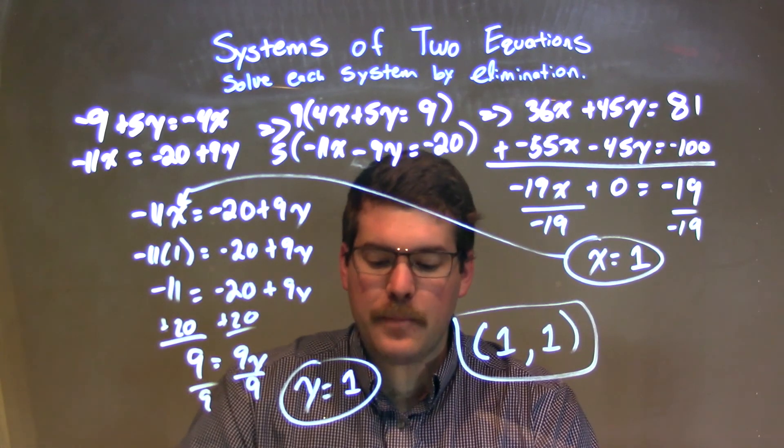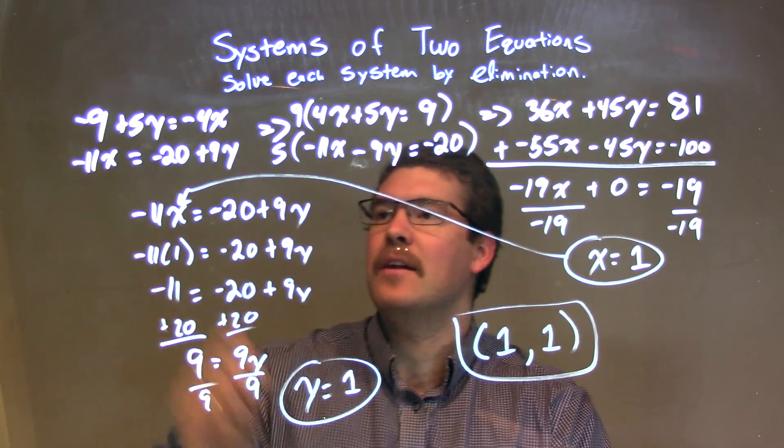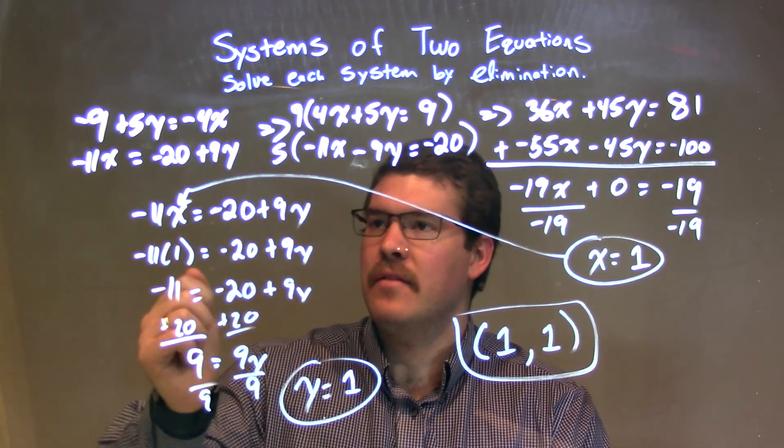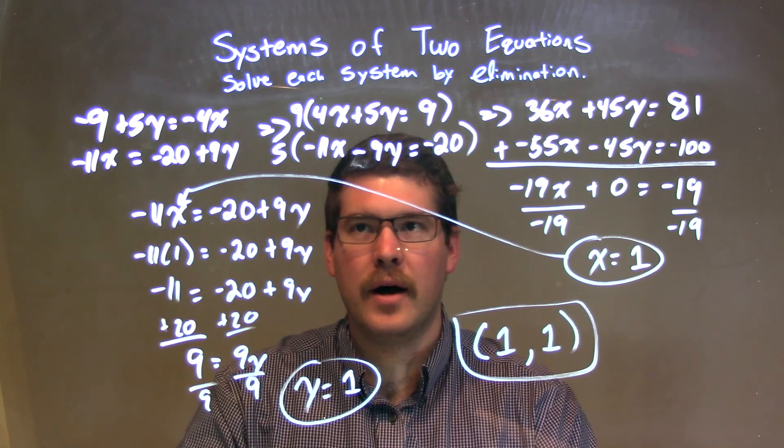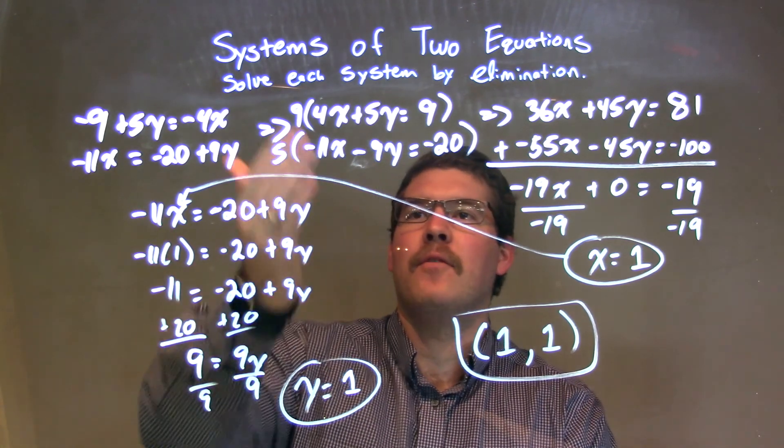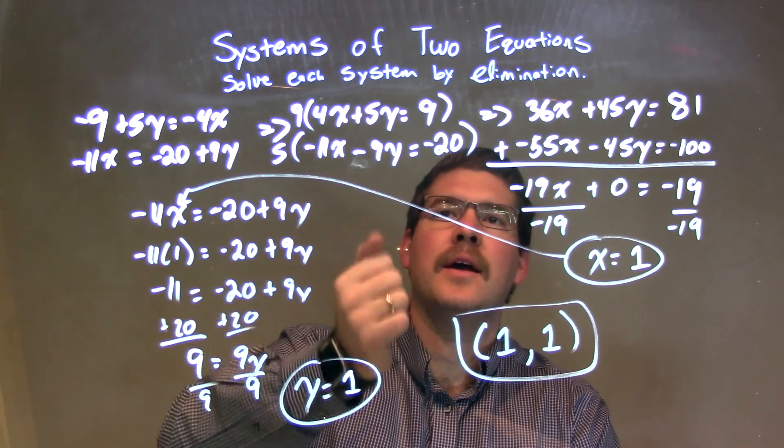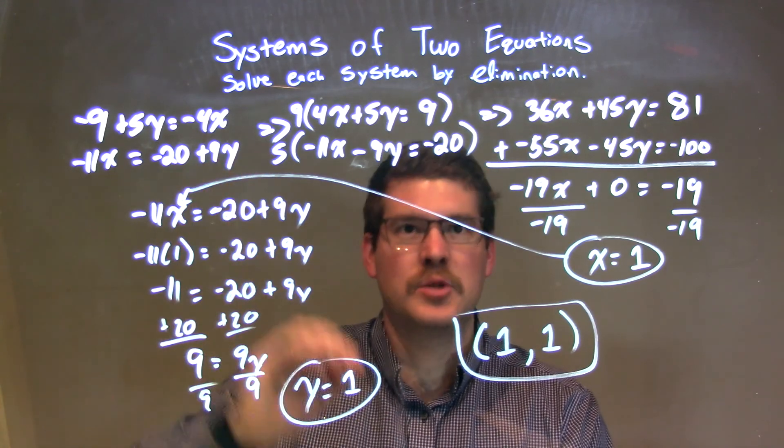So, let's recap. We're given our two equations. Negative 9 plus 5y equals negative 4x, and negative 11x equals negative 20 plus 9y. I rewrote this to have all the variables come first, x and y equals 9, by using our algebraic rules.